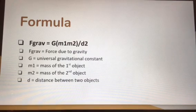The formula for gravitational force is F gravity equals G times M1 times M2 divided by the distance squared.